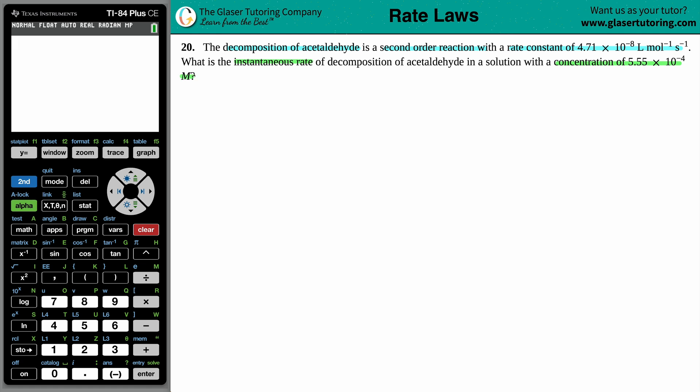Okay, so we're talking about decomposition and they say that this is second order and they give us a rate constant. Now if they give us the rate constant and they're looking for an instantaneous rate, the first equation that comes to my mind is the general rate law because a general rate law can be made specific for the specific question at hand. Now the general rate formula is this one right here. Rate equals k times the reactants raised to their orders.